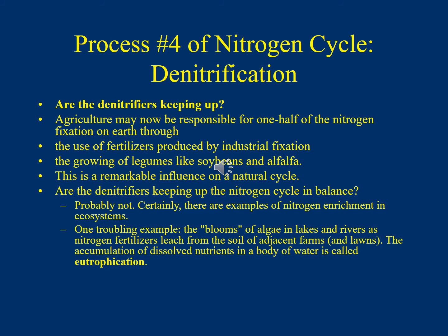Examples of nitrogen enrichment include algal blooms in lakes and rivers: too much nitrogen fertilizer leaches from nearby farm soils, causing excessive algae growth that uses up all the dissolved oxygen in the water, causing fish to die from lack of oxygen. This process is called eutrophication — and the nitrogen cycle is clearly being disrupted by the amounts of nitrogen humans are adding to the atmosphere and soil.